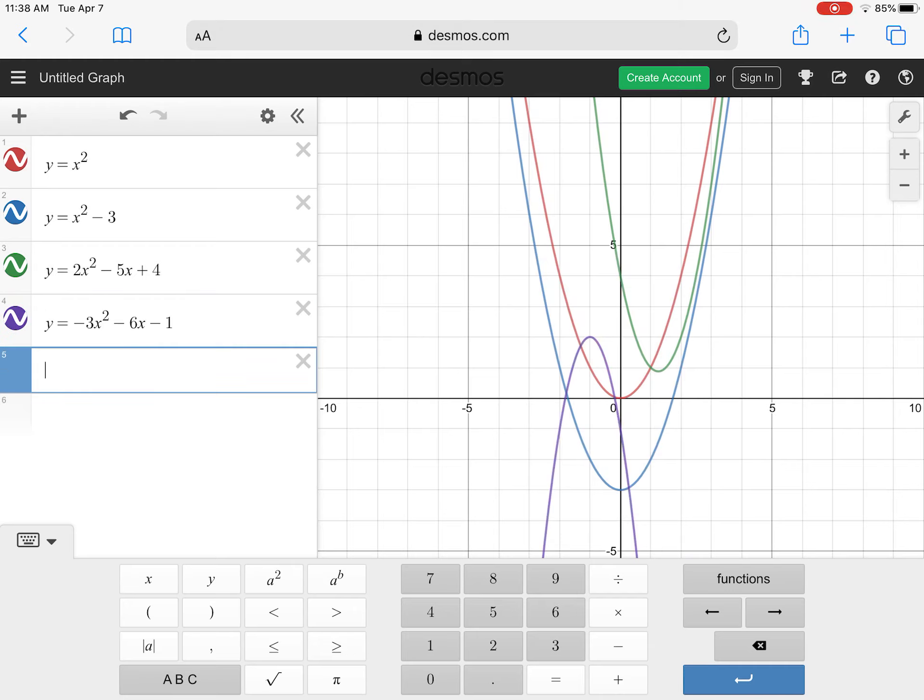And then for our last one, we have y equals negative 0.5x squared plus 3x minus 6.